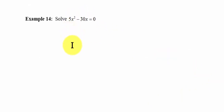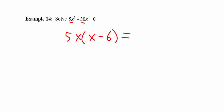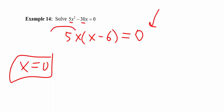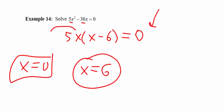Take a look at example 14. Here we can start by factoring out the 5x. So if I pull a 5x out and divide each piece by 5x, you're going to be left with 5x times x minus 6 equals zero. What values of x will give us zero? If I made x equals zero, 5 times zero would be zero, and if I made x equal to positive 6, then 6 minus 6 is zero. So my two answers are x equals zero and x equals 6.